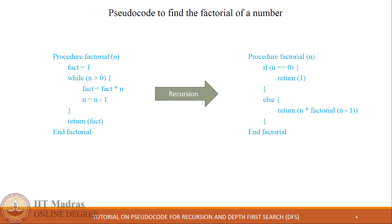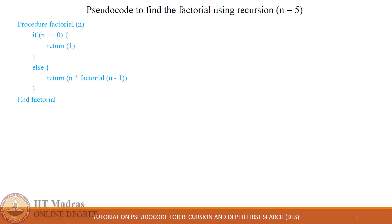Let's take this procedure with pseudocode and try to analyze how it actually executes. We will execute the recursive factorial procedure using a specific value for n — let's assume n equals 5. The procedure will start its execution and first check whether 5 equals 0.